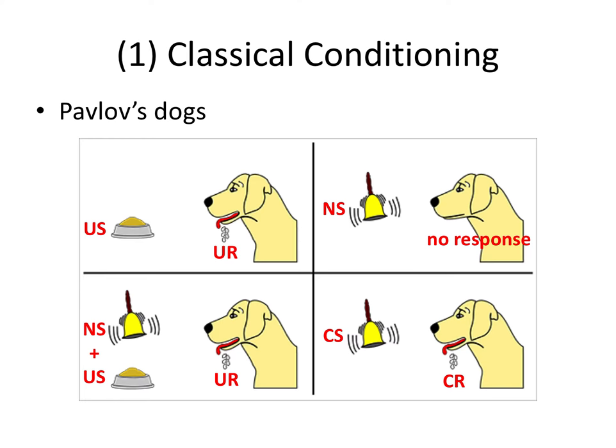There is hope, though. Classical extinction can occur if the link between the stimulus and the reaction is discontinued. For example, you could have a different dentist, or have an appointment without any injections, and so on. It's possible to break this link. So it's really interesting and certainly applicable in dentistry, considering classical conditioning and how it can work in the mind of the patient.